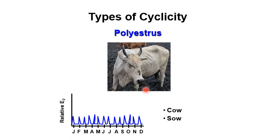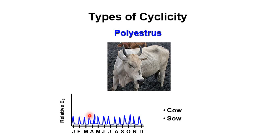The estrous cycle of the cow is 21 days. This diagram shows the estrous cycle of the cow, with the x-axis representing months of the year and the y-axis representing the relative amount of estradiol in the blood. The peaks represent estradiol surges — when estrogen or estradiol peaks, there is manifestation of estrus behavior. This type of cycle is exhibited by the cow and the sow.